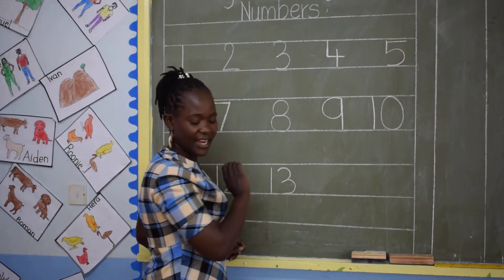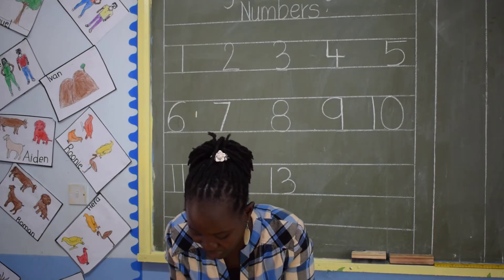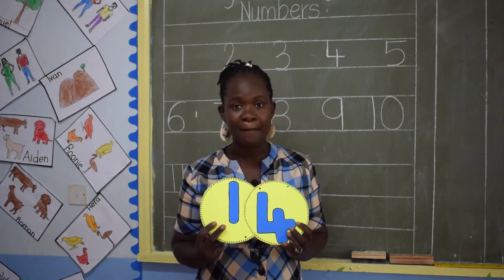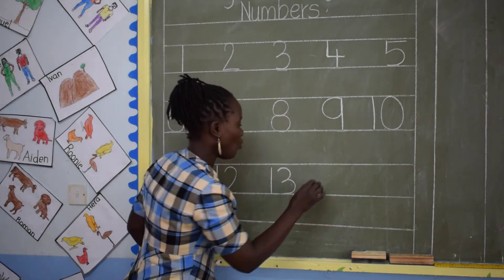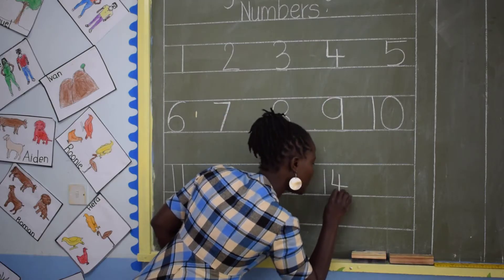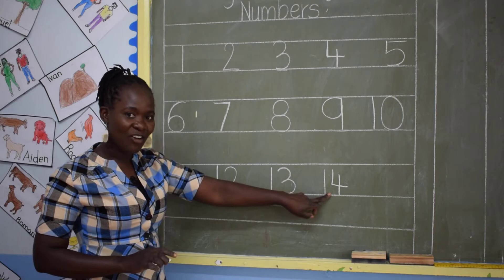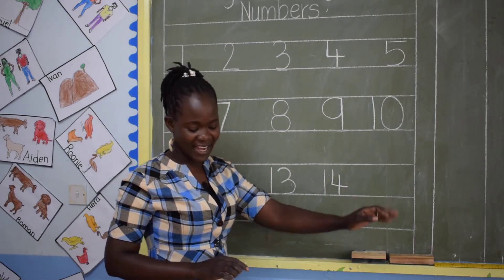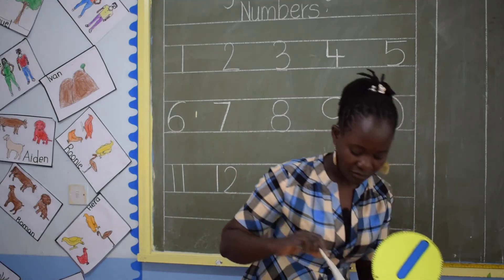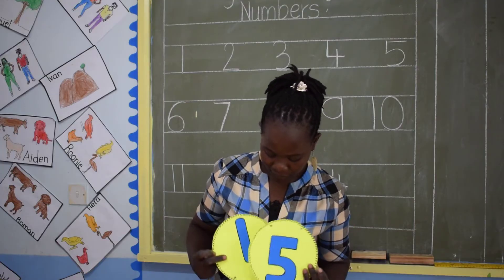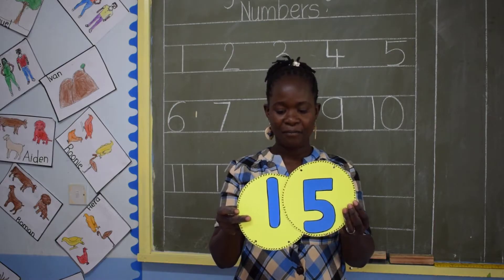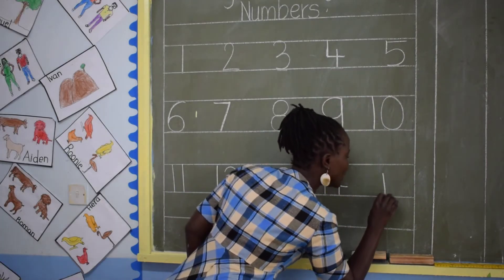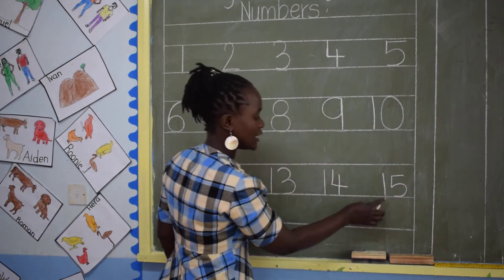The next number is 14. Let me write number 14. Number 14 is 1 and 4. 1 and 4 makes number 14. This is number 14. Can we count again, children? 11, 12, 13, 14. Next number is 15, and 15 is 1 and 5. 1 and 5 makes 15. This is number 15. Let's write number 15: 1 and 5. This is 15.